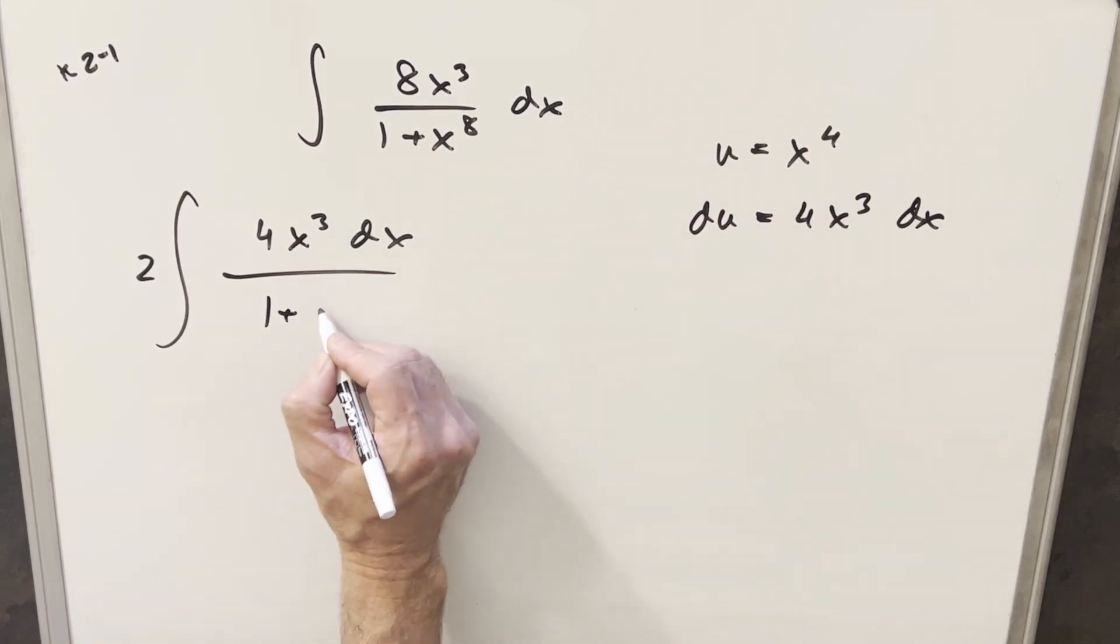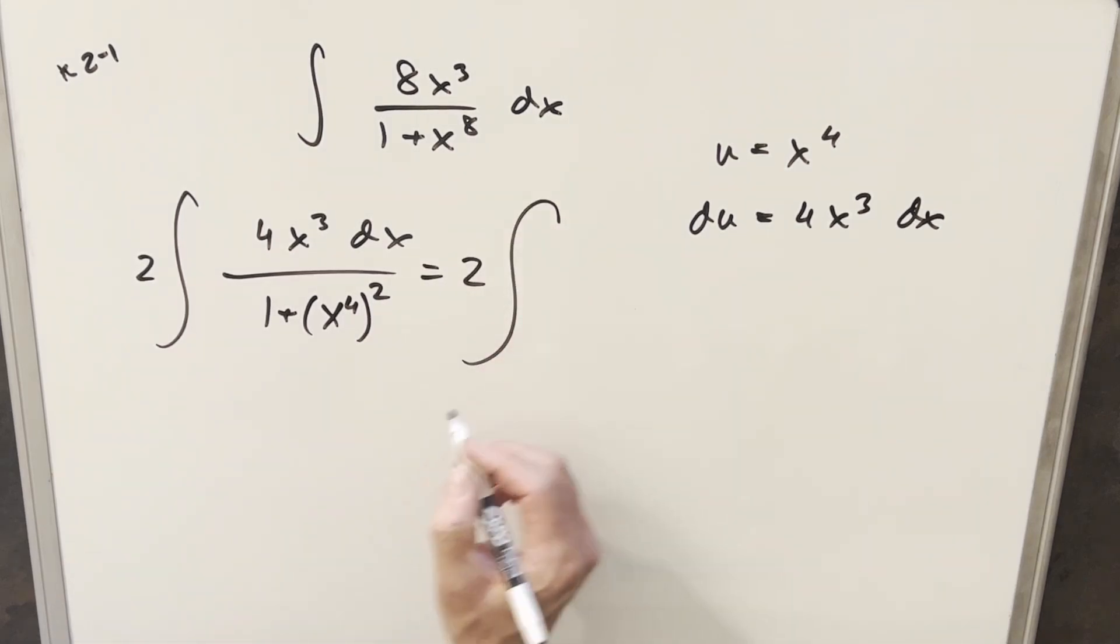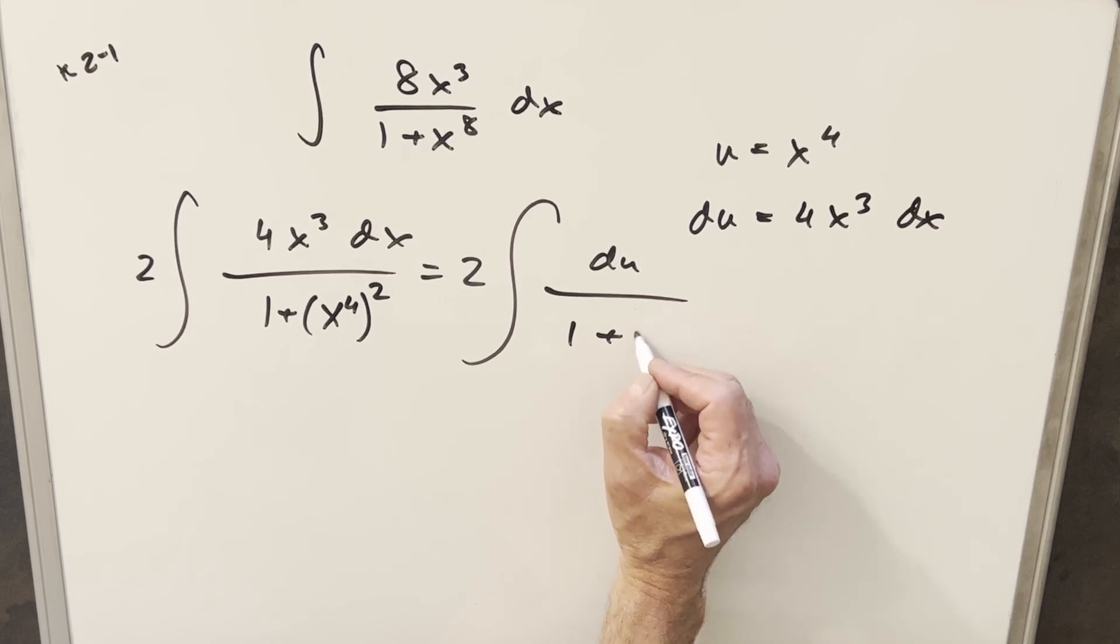And then for this x to the 4th, what I'll do is just write my x to the 8th. We can write this as x to the 4th all squared. And now we're in good shape for a u substitution. So bring the 2 out front. We're going to have just the du here. And then in the denominator, we're going to have just 1 plus u squared.